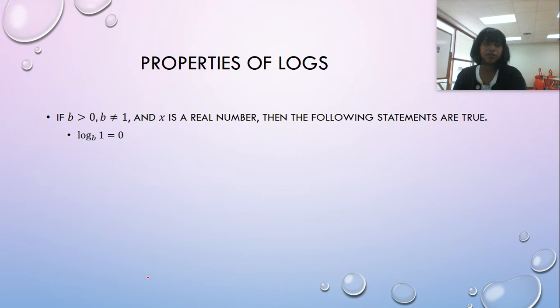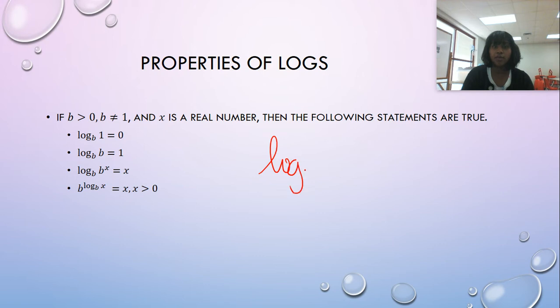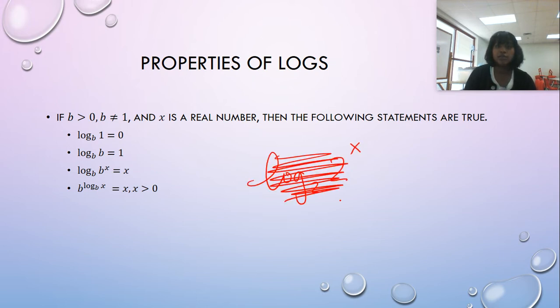There's our first set. Log base B of one is always equal to zero. Log base B of B is equal to one. We just saw that log base two of two is equal to one. Log base 36 of 36 is equal to one. No matter what, it's always going to be one. Log base B of B^X is equal to X. If I have log base two of two to the X, if all of this becomes one, the only thing left is X.